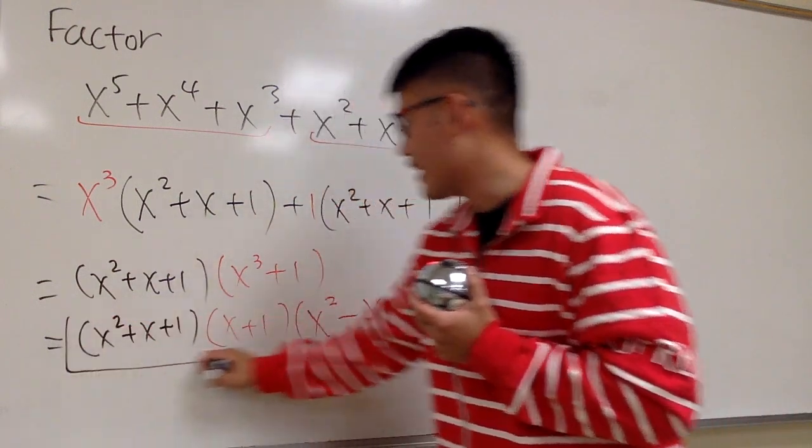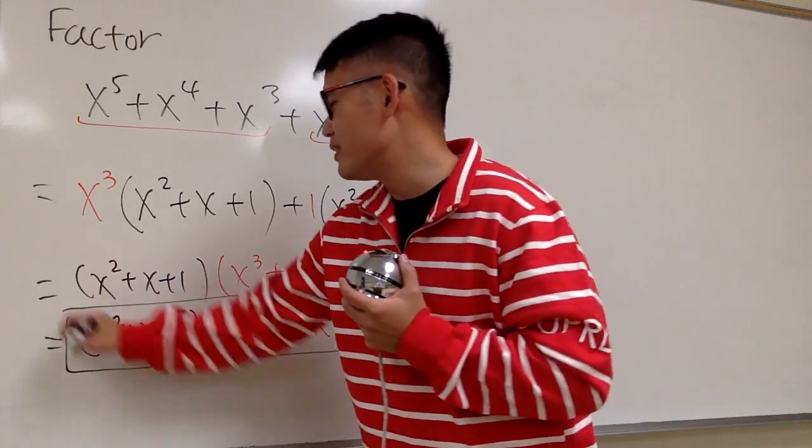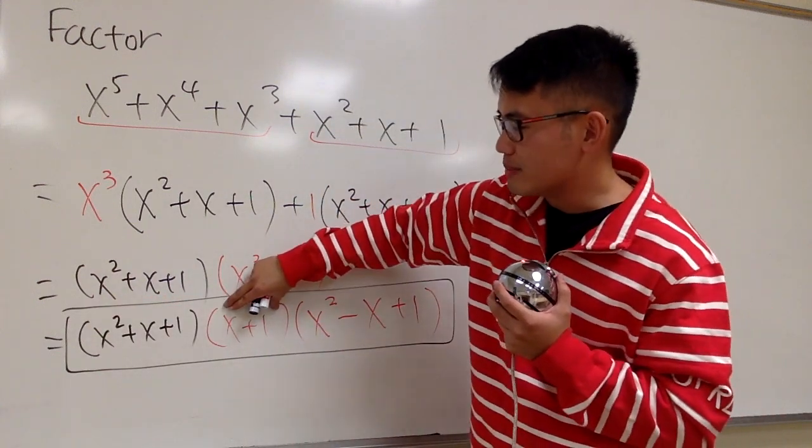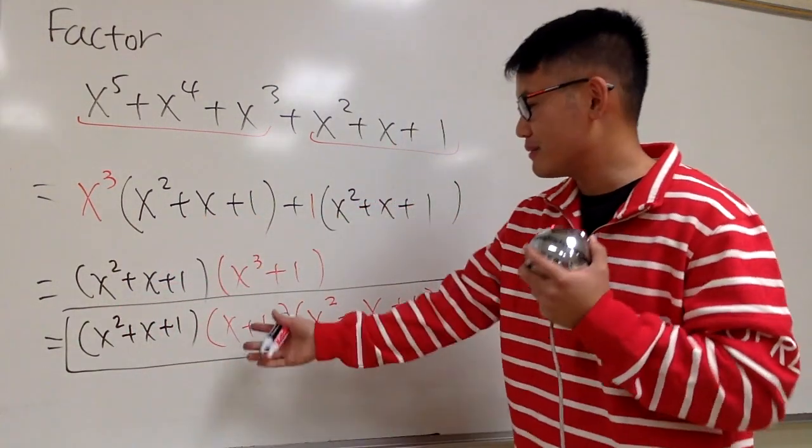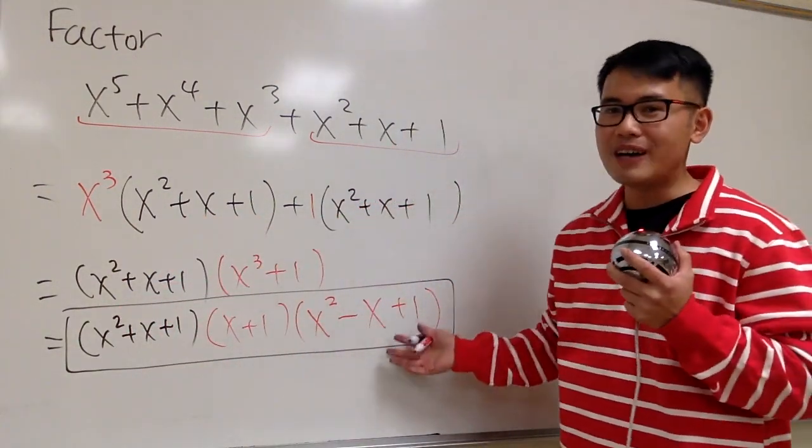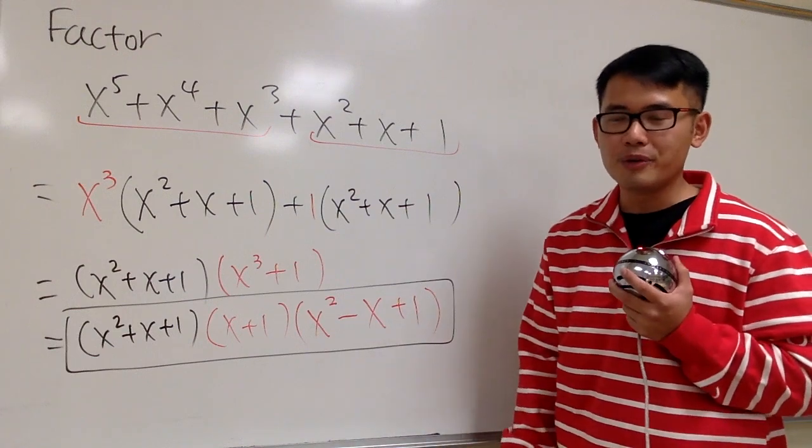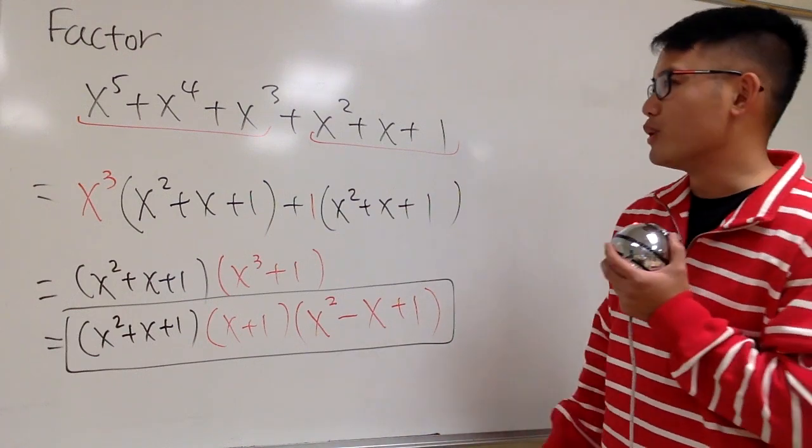The order doesn't matter, but usually, maybe you want to write the smallest, which is this one right here. It has two terms all the way first. But this is it. How do you factor a six-term polynomial? And you can also try this if you would like.